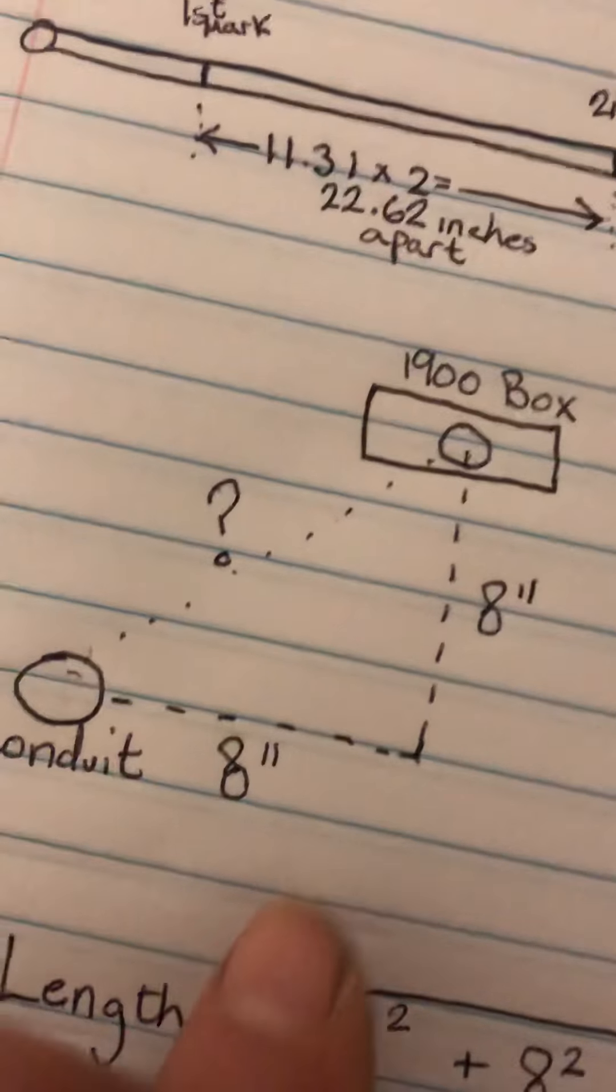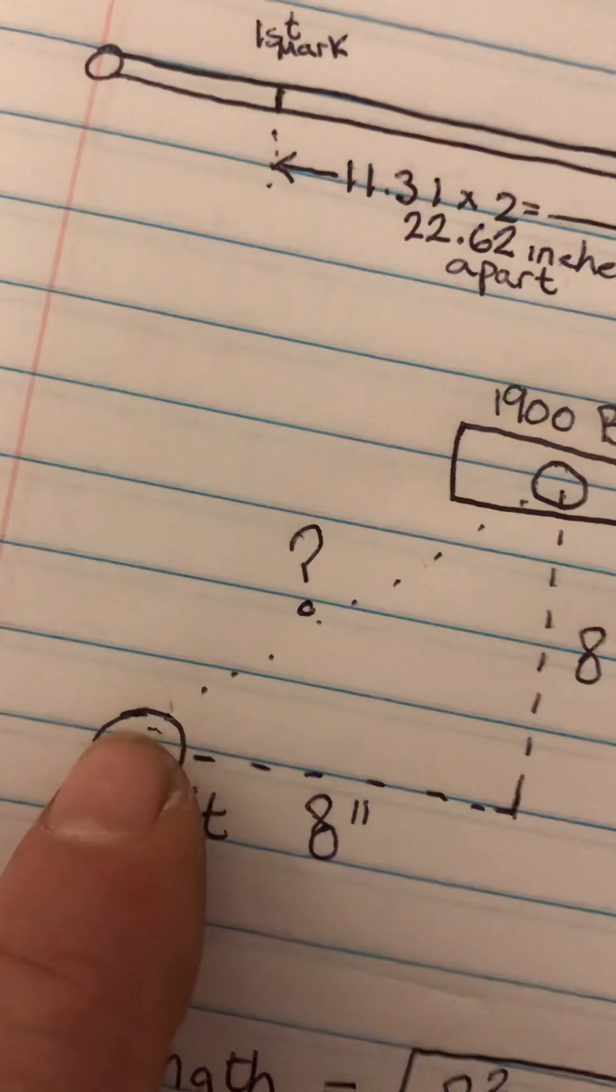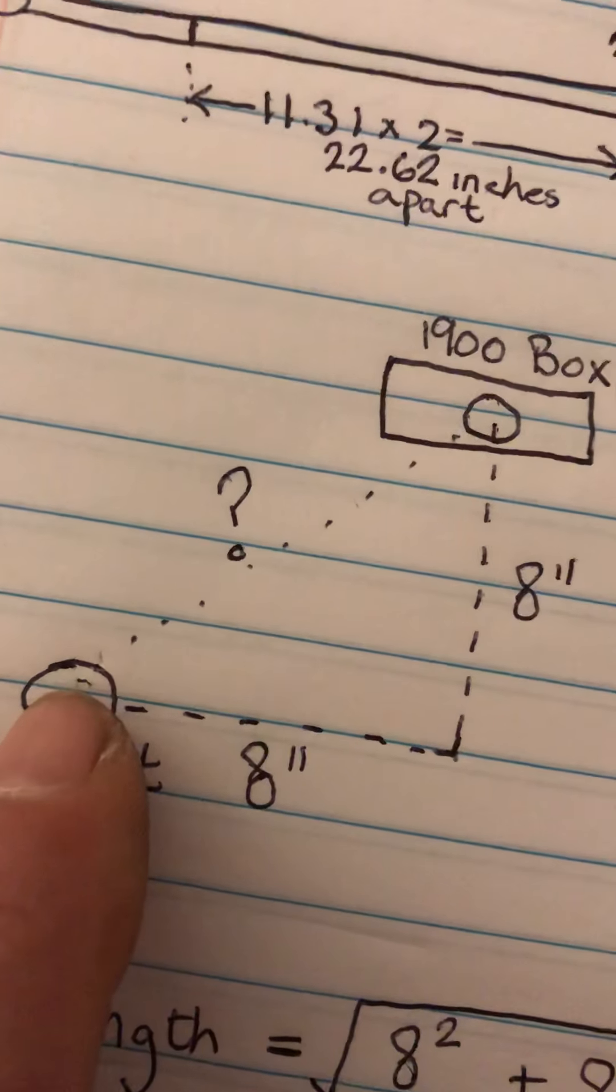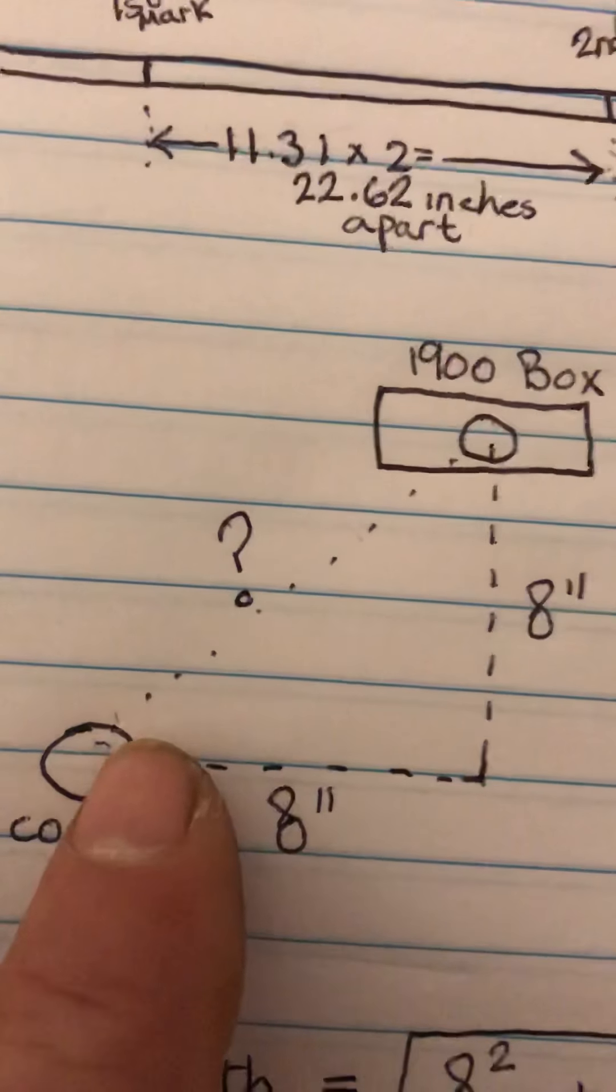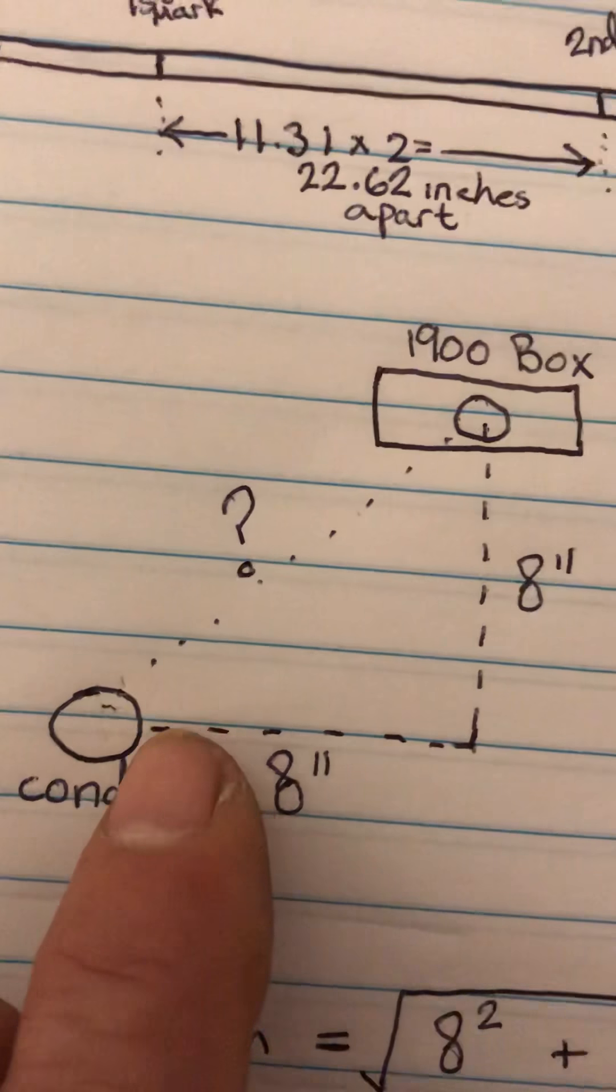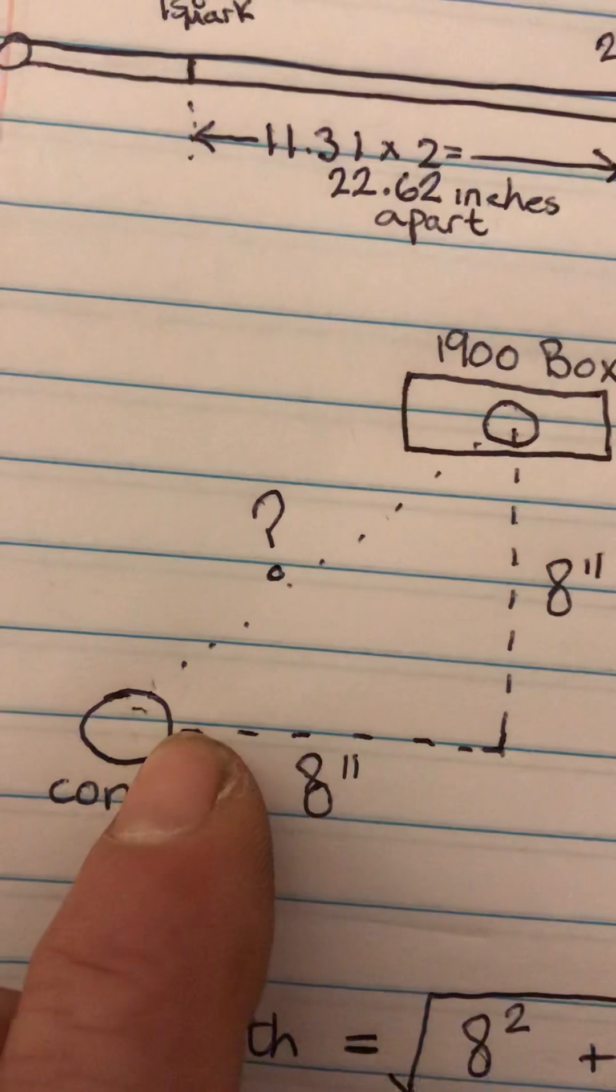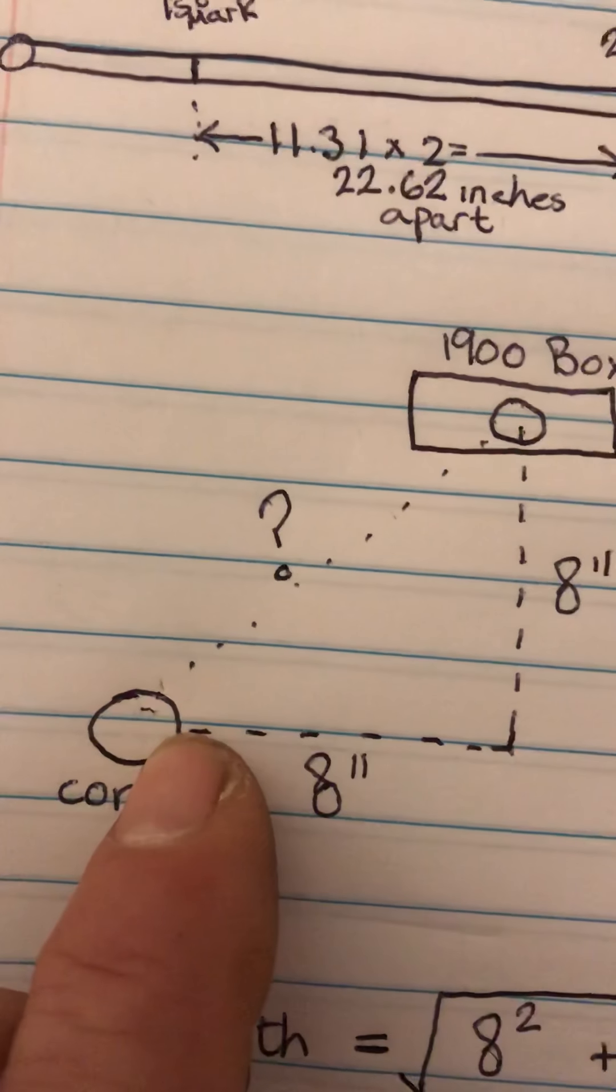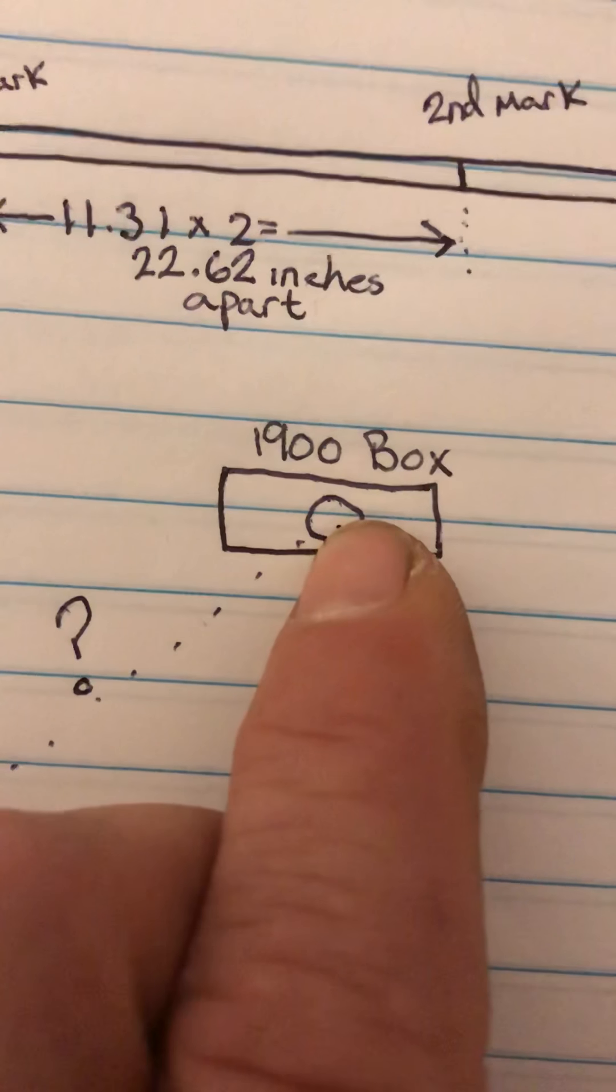Same with the height. We already determined that the length in our example is eight inches. We do the same thing with the height - take the tape measure from the center of the conduit and measure to the center of that hole.